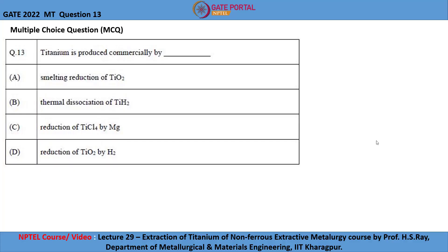Let me study the 13th equation of GATE 2022. Titanium is produced commercially by: option A, smelting reduction of titanium oxide TiO2; option B, thermal dissociation of TiH2; option C, reduction of TiCl4 by magnesium; and option D, reduction of TiO2 by hydrogen.